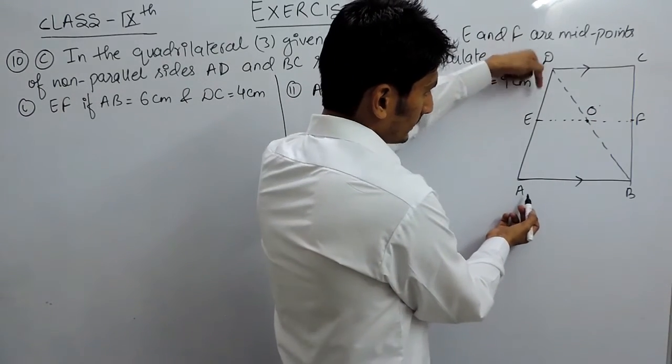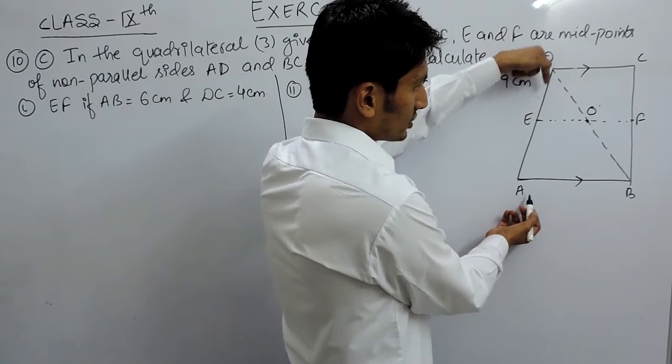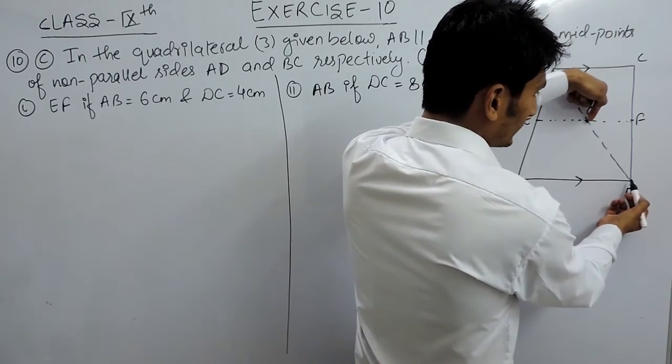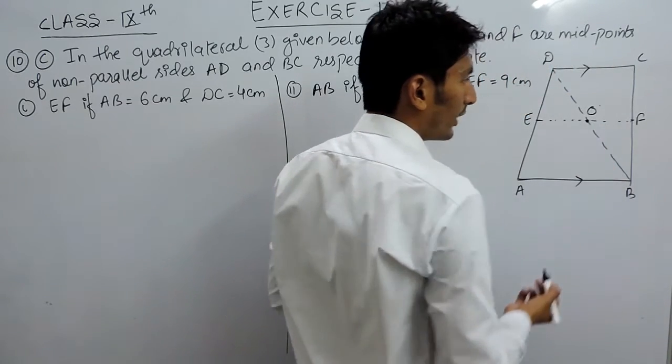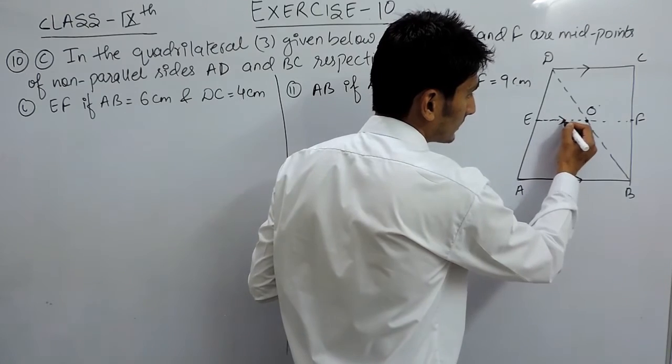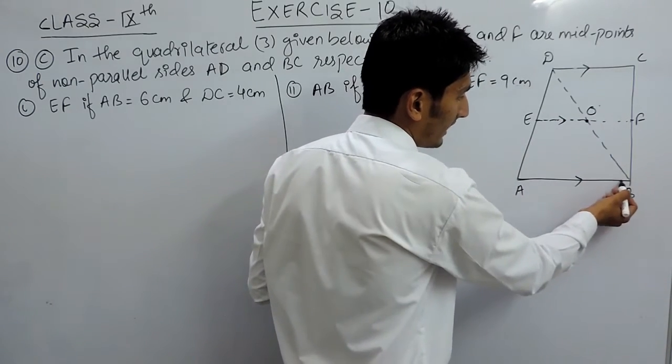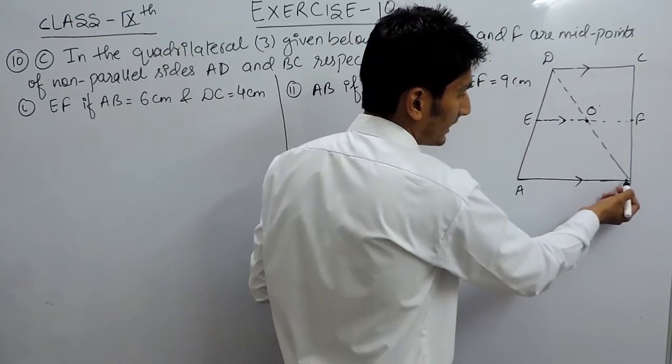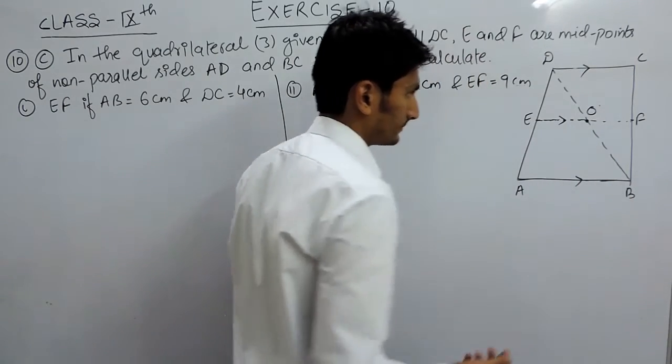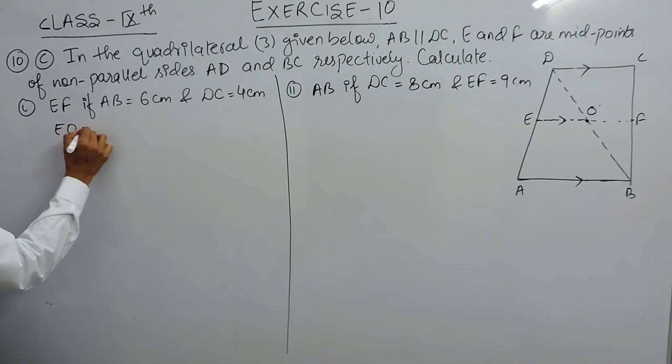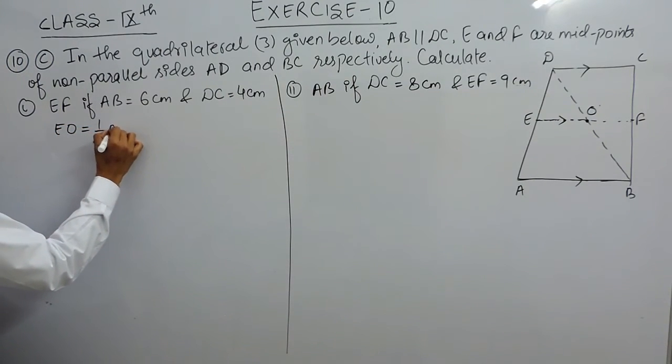According to midpoint theorem, E is the midpoint which is given to you, and if I draw a parallel line it should meet the midpoint of the third side. This line must be parallel to the third side, and this line must be equal to half of this. So I can write EO must be half of AB.